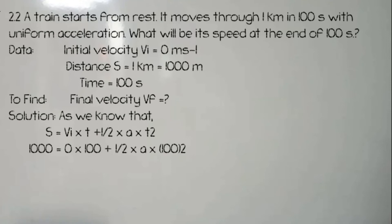By putting the values: 1000 = 100 × 0, this term becomes 0, plus 1/2 and 100 squared is 10,000A. Divide by 2: 10,000 divided by 2 is 5,000. We have 1,000 on the other side. To find acceleration, divide both sides by 5,000. Acceleration will be 0.2 meter per second square.